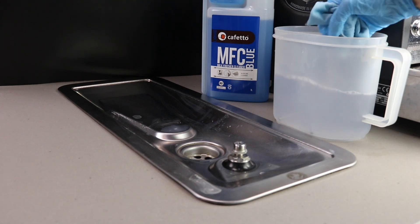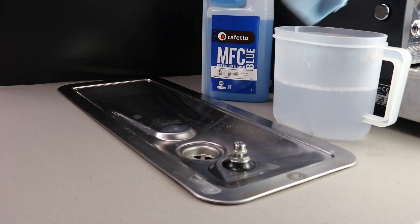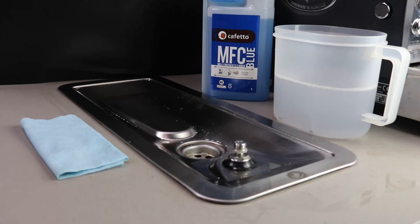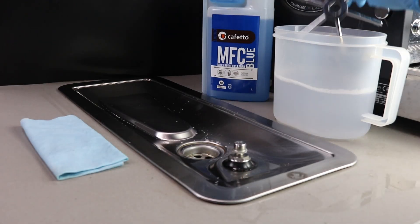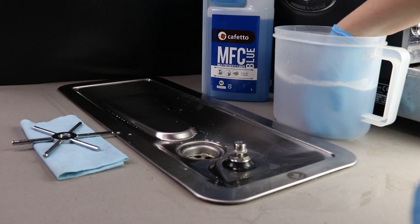Soak your cloth in the milk frother cleaning solution and use it to wipe over the rinser. Once you've cleaned the rinsing sink, remove your star, wobble washer, and spin jet from the solution and rinse them with clean water.